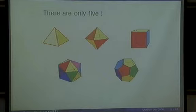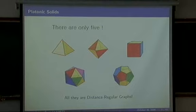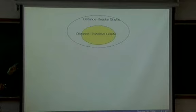As you know, a platonic solid is a regular solid such that all faces are congruent to regular polygons and the same number of faces meet at every vertex. There are only five platonic solids, and they have highly symmetric properties. In particular, all five are distance-regular graphs, and also distance-transitive graphs.